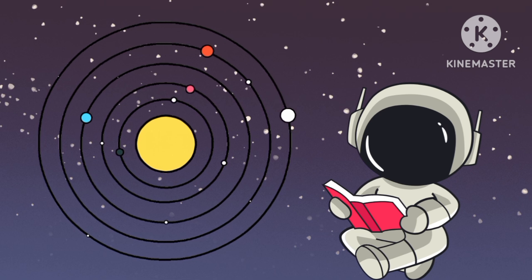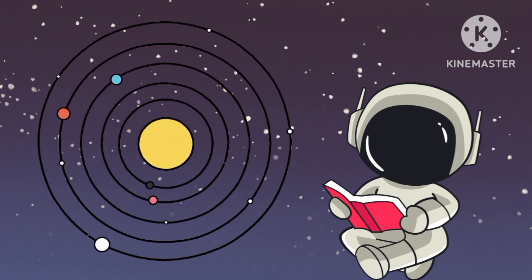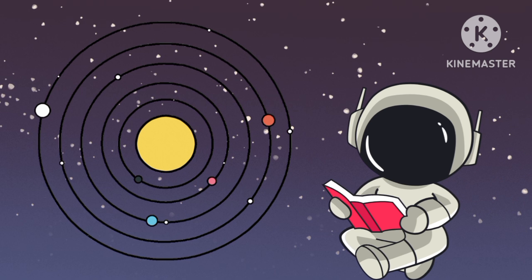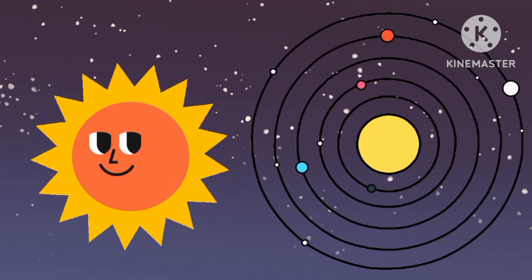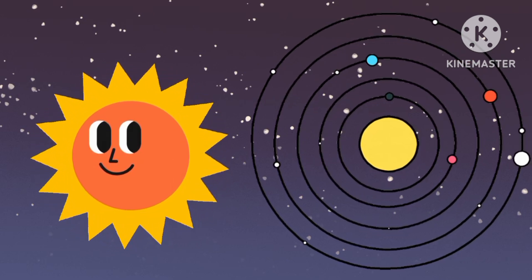Solar System is a group of planets, moon, asteroids and other objects. In Solar System, there are 8 planets. The star at the center of our Solar System is the Sun.